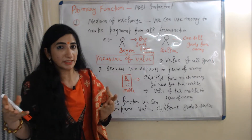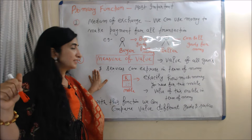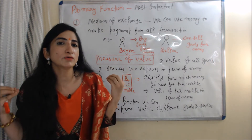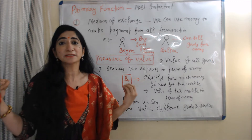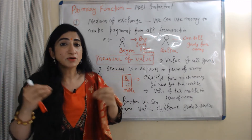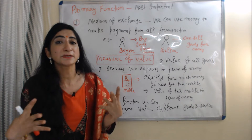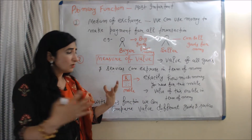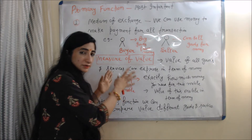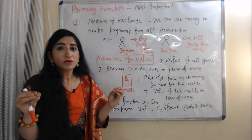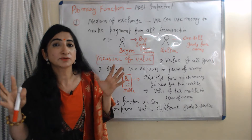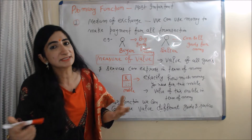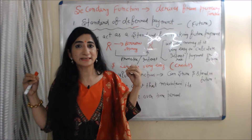The second primary function of money is measure of value. Measure of value means the value of all goods and services can be expressed in terms of money, or we can say that the price of goods and services can be expressed in terms of money. For example, if you want to buy this mobile, you exactly know how much money you need — you know the value of this mobile in terms of money. With this function, we can compare the value of different goods and services.